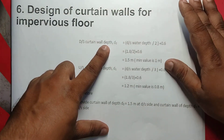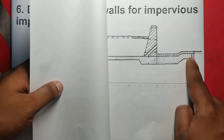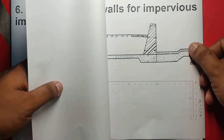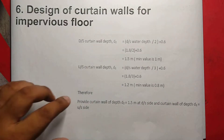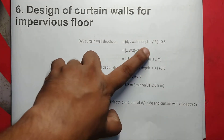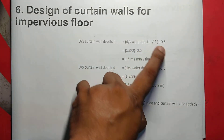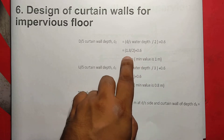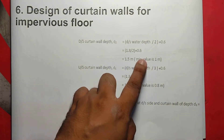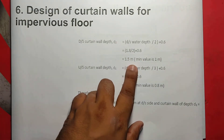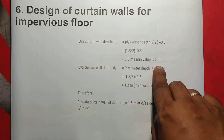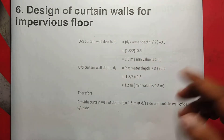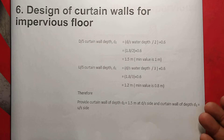It's the downstream-side curtain wall depth we need to find. Now, downstream side: D2 is equal to downstream water depth divided by 2 plus 0.6, which is 1.8 divided by 2 plus 0.6, equal to 1.5 meters. This is the minimum value of 1.5 meters. If we take a minimum of 1.5 meters, we will take 1.5 meters.